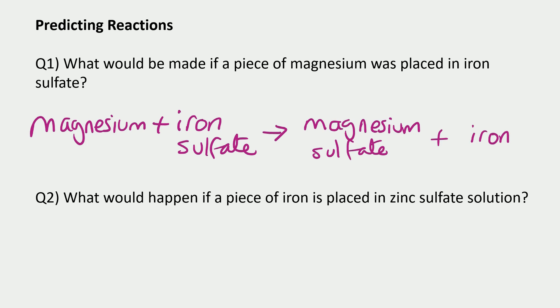Let's look at another example. What would happen if a piece of iron is placed in zinc sulfate solution? Well, this time, zinc is more reactive than iron. So iron tries to take the sulfate from zinc. It tries to displace zinc. But in this case, it can't. It cannot displace zinc. So there would be no reaction. And that's because iron is less reactive than zinc.